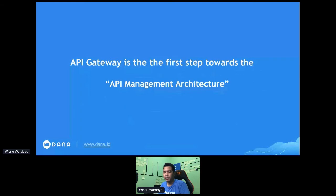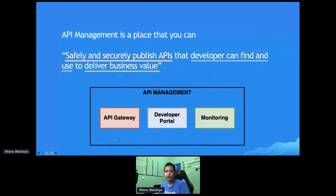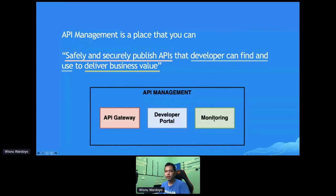API management is the place where you can safely and securely publish APIs that developers can find and use to deliver business value. Looking at the API management diagram, there are three minimal components: the first is the API Gateway, the second is the developer portal, and the third is a monitoring system.